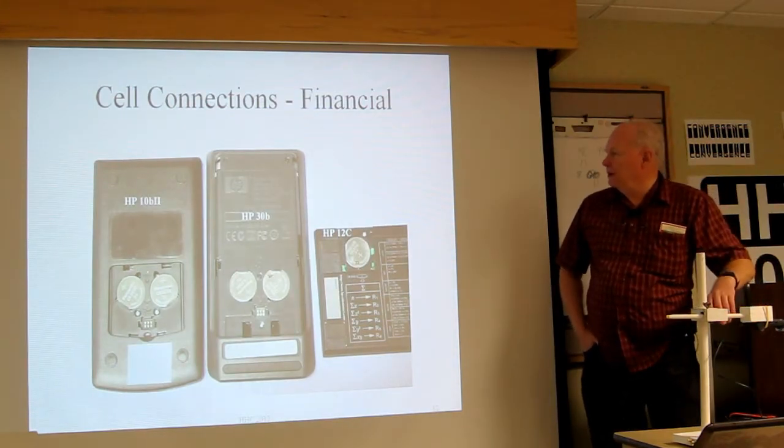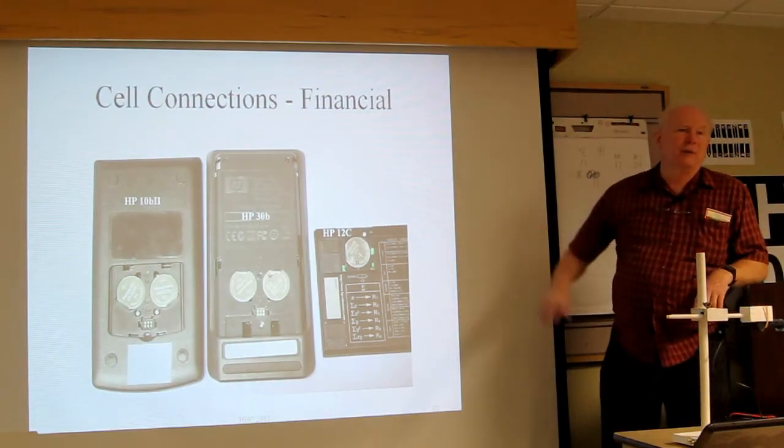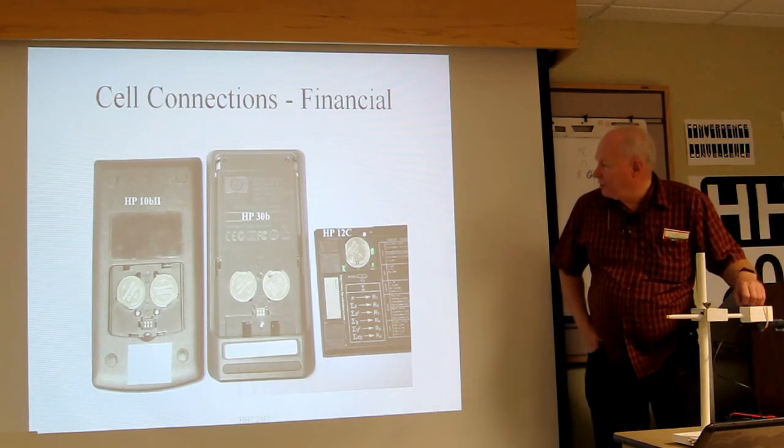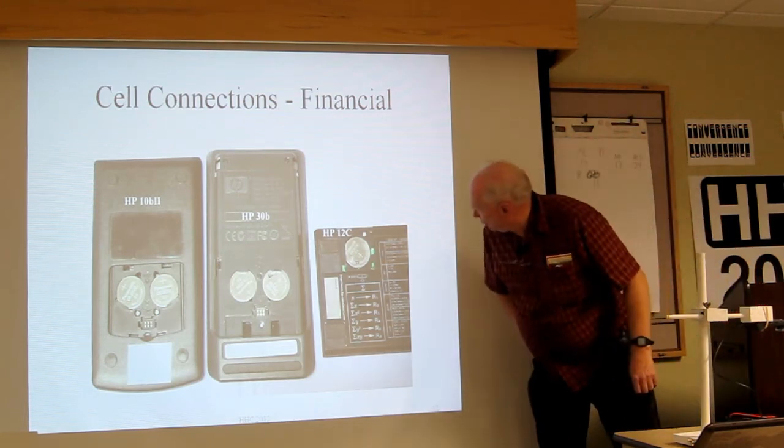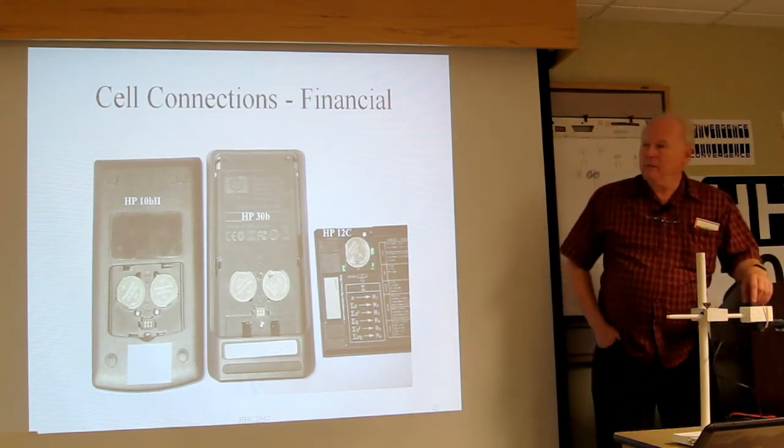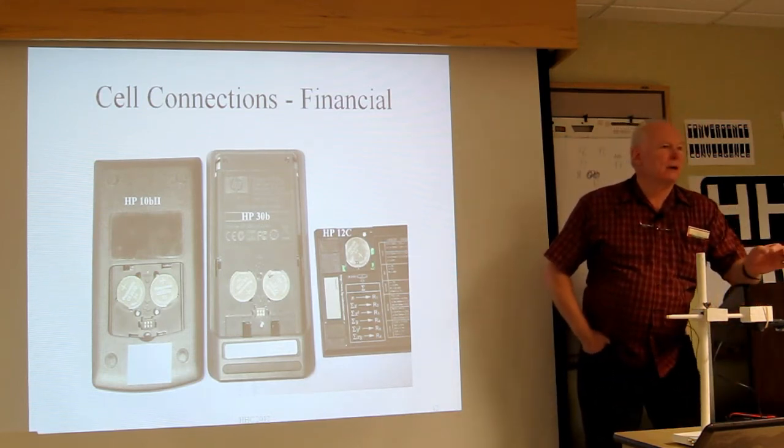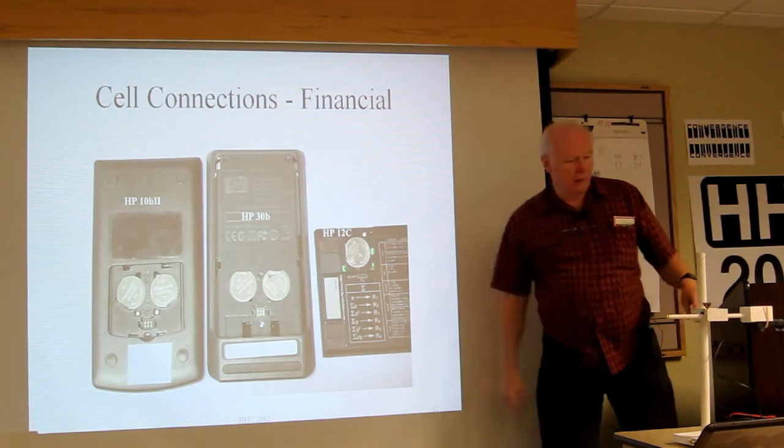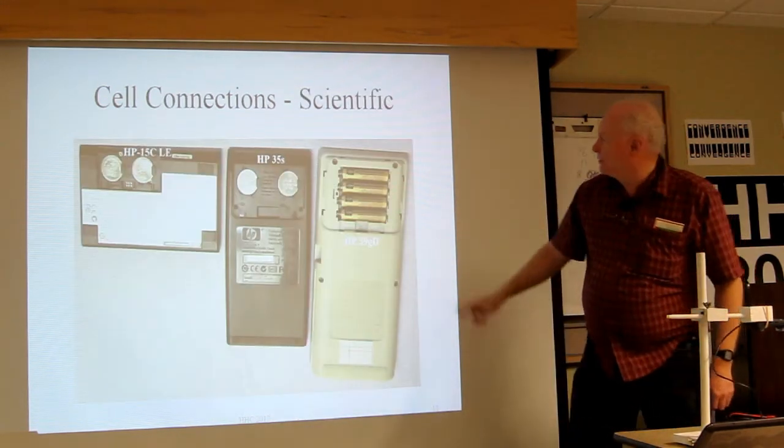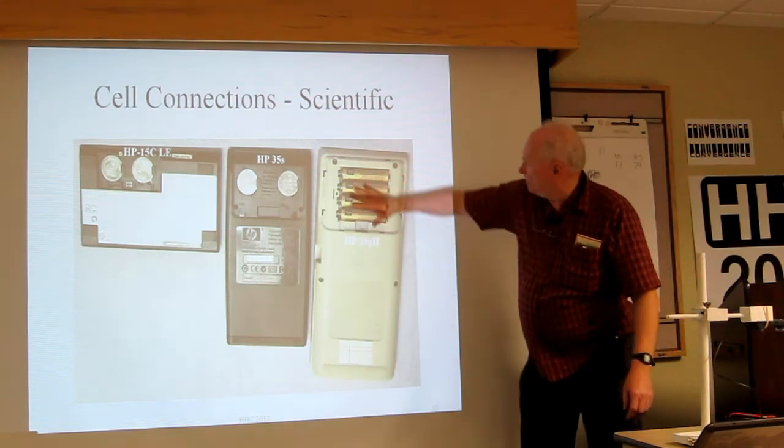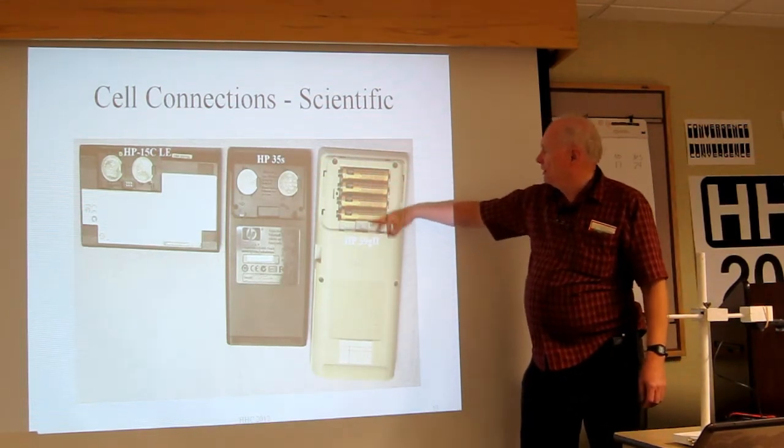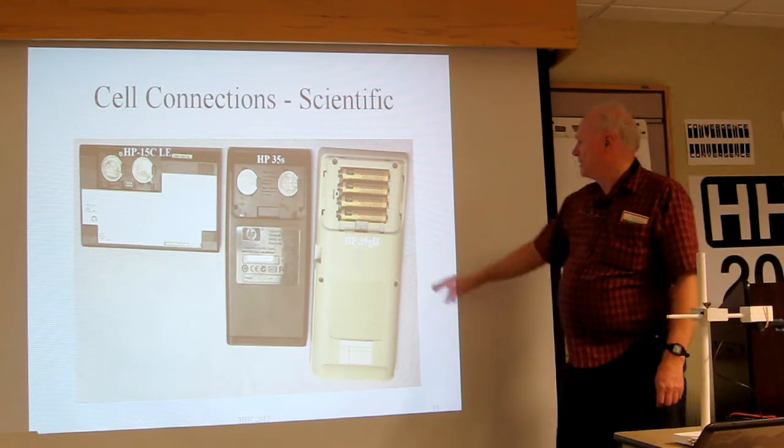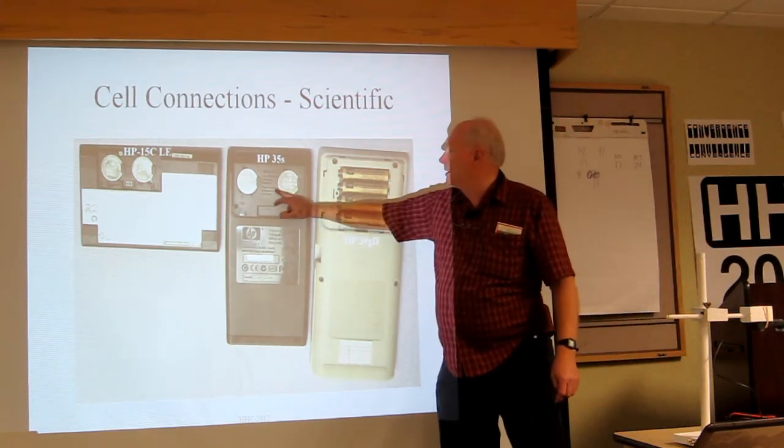The cell connections are illustrated here, the backs of the calculators. These are the three models I picked to measure. All of them, the newer ones, are using a very nice power source called the CR 2032. It's a 3-volt lithium battery. There's one here, two each are there. For the other models, these are the scientific. Here we're using AA batteries. This is the 39G. 35S and a 15C. We have two cells here. How they're connected and how they're used varies from machine to machine. There's one case I still haven't figured out how it's working.